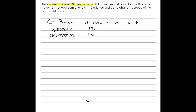When going upstream, you're traveling against the current, so your rate is your speed minus the current: (r − 3). When going downstream, the current is with you, so your rate is (r + 3). The time upstream and time downstream are two different values — I'll label them time-up and time-down.